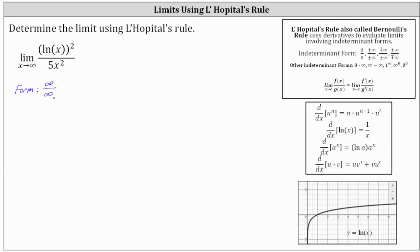L'Hôpital's rule states: if we have one of the indeterminate forms shown here in fraction form, then the limit as x approaches c of f(x) divided by g(x) equals the limit as x approaches c of f′(x) divided by g′(x). So let's work on determining the derivatives of the numerator and denominator.